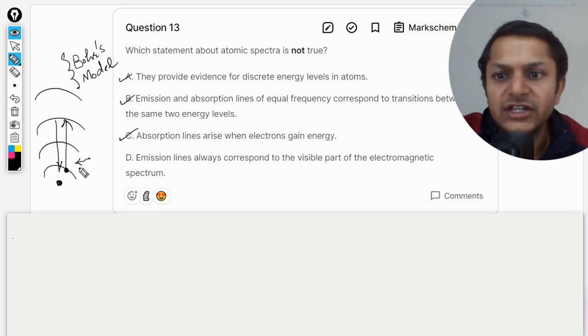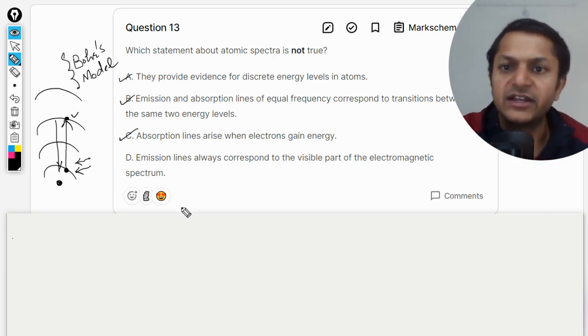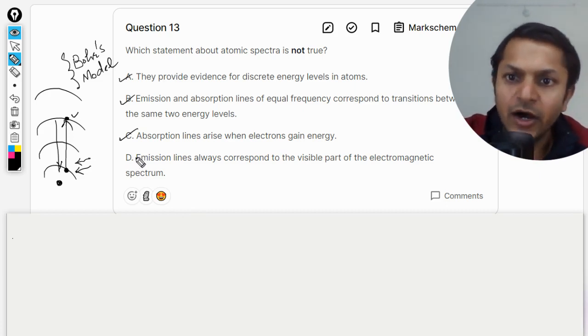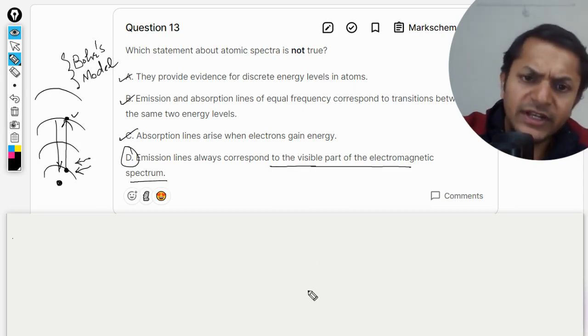When the electrons gain energy at that time they jump and they go to the excited state, and that is why absorption spectrum is created. Obviously the answer is D. Now, emission line always correspond to the visible part of the electromagnetic spectrum. No, it's not like that.